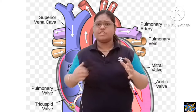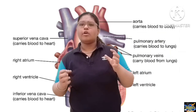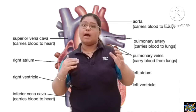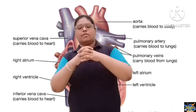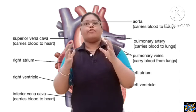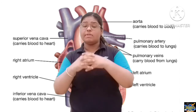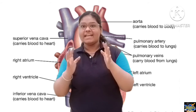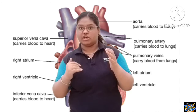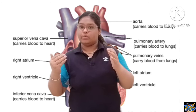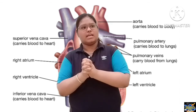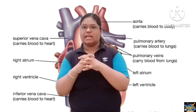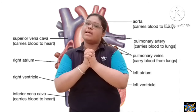The heart contracts and relaxes — contract and relax, contract and relax. As we have seen on a BP machine, the reading is 120 over 80. 120 is the systolic pressure, which means contraction — that is high pressure. 80 is the diastolic pressure, which means relaxation. So systole means contraction and diastole means relaxation.